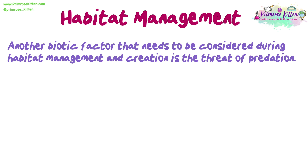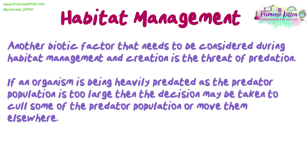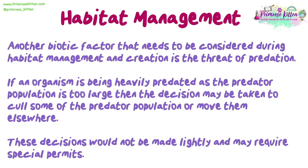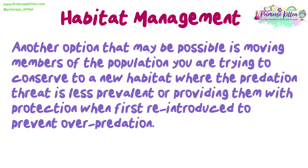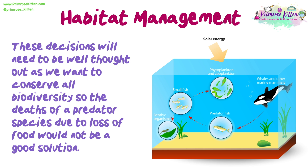Another biotic factor that needs to be considered during habitat management and creation is the threat of predation. If an organism is being heavily predated because the predator population is too large, then the decision may need to be taken to cull some of the predator population or move them elsewhere. These decisions would not be made lightly and may require special permits. Another option may be moving members of the population you are trying to conserve to a new habitat where the predation threat is less prevalent, or providing them with protection when first reintroduced to prevent over-predation. These decisions will need to be well thought out, as we want to conserve all biodiversity — the deaths of a predator species due to loss of food would not be a good solution.